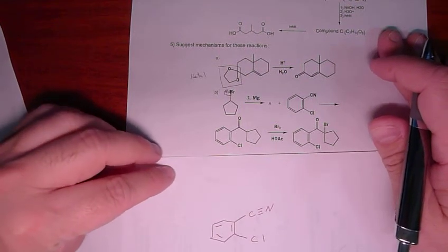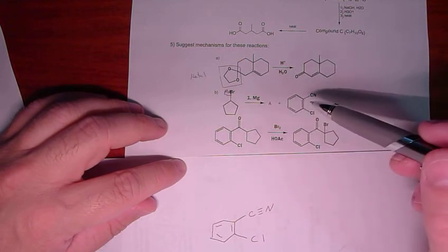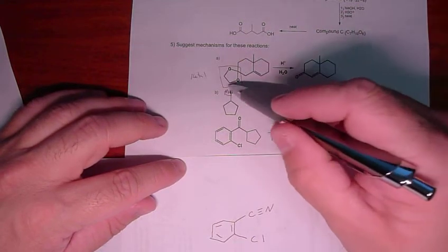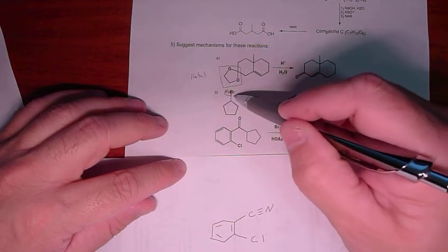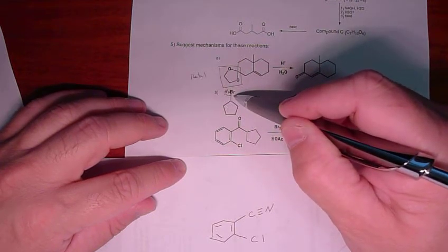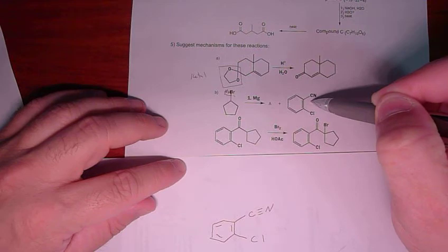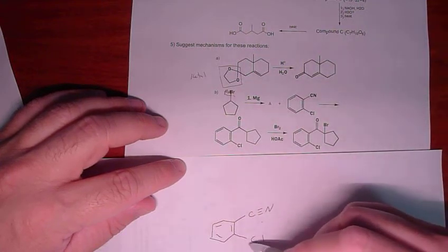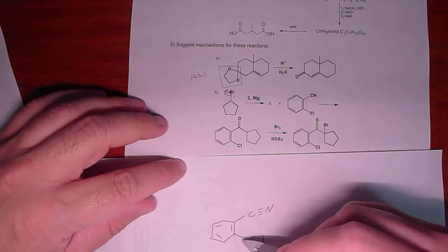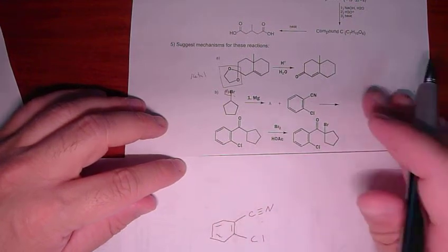So what do we eventually want to have happen here? We're looking at this Grignard reagent reacting with this molecule. So what's the most electrophilic position on this molecule? It is not this carbon-chlorine bond to the benzene ring.